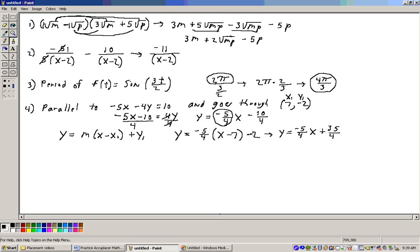And then minus 2, I'm going to get a common denominator of this, minus 2 is the same as minus 8 fourths. Combining those fractions, we get y equals negative 5 fourths x, and 35 fourths minus 8 fourths is 27 fourths. And that's what I get on that one right there. Let me just double check it. I think we're good. Yeah. So let's go on to problem number 5.